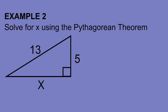Okay, let's look at the second example. Remember, the side opposite the right angle, that's our 90 degree angle, is our hypotenuse, which is labeled c. The other two sides, we can label a and b. And it doesn't matter which one is which.